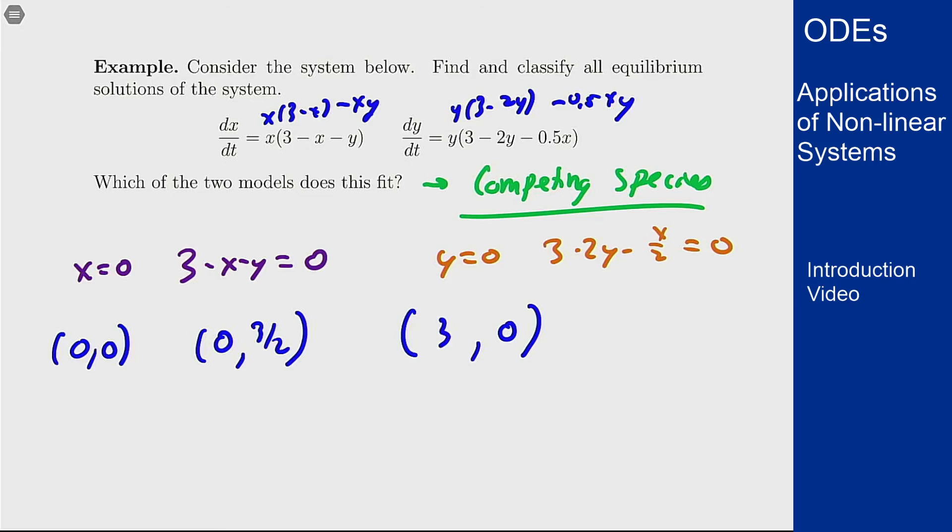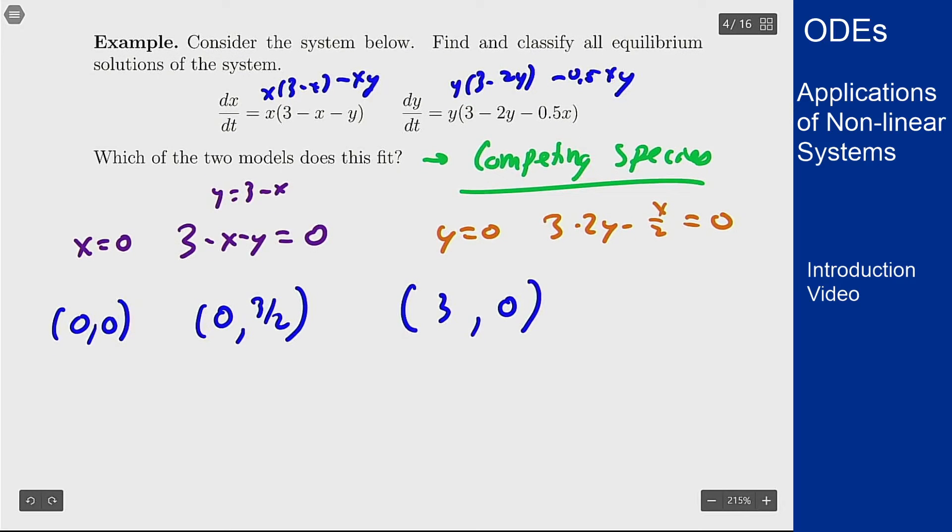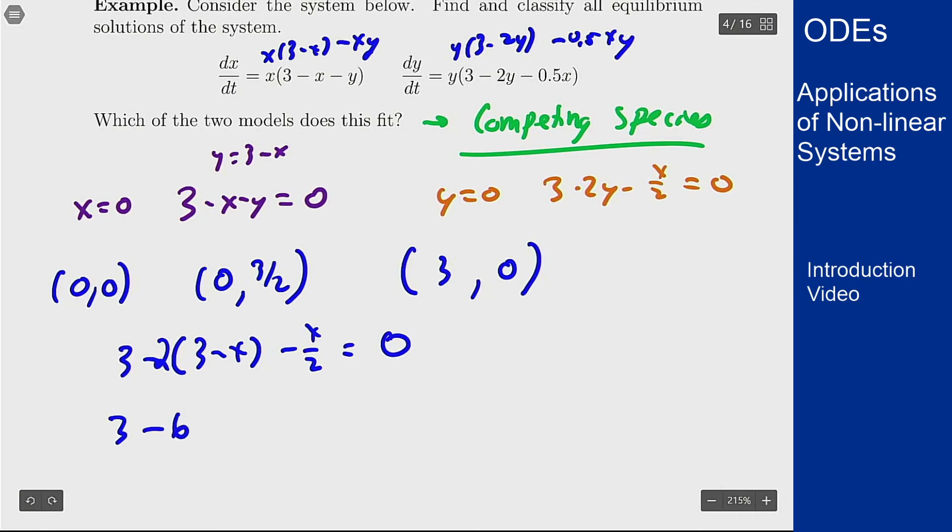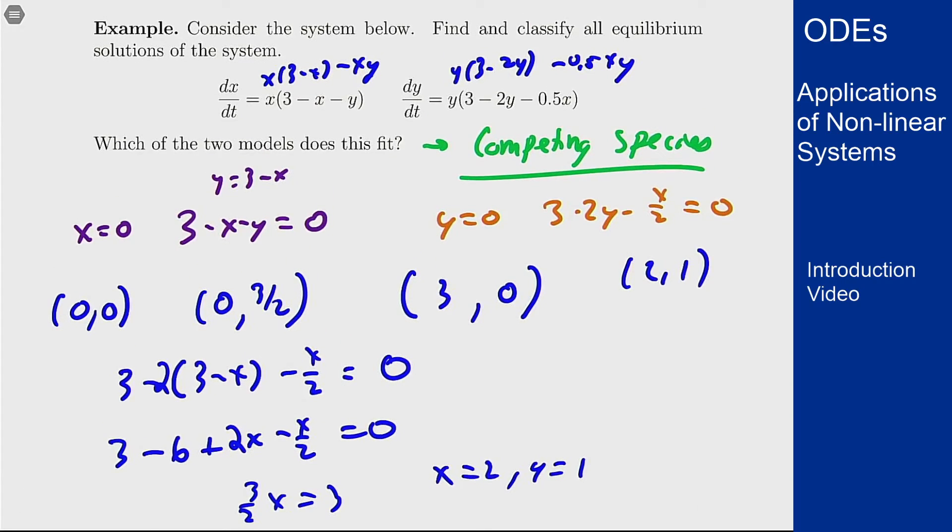And then the intersection point of these last two: I can, for instance, solve for y over here. You get that y is 3 minus x and plug that in. You get that 3 minus (3 minus x) times 2 minus x/2 should be 0. So 3 minus 6 plus 2x minus x/2 is 0, so 3/2 x equals 3 or x equals 2 and y equals 1.